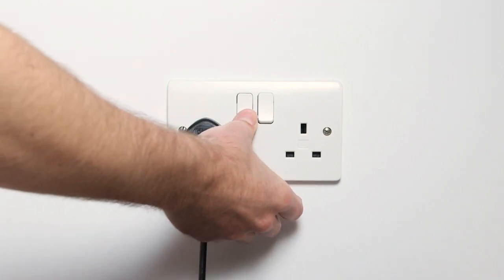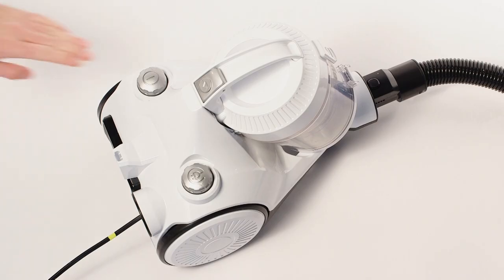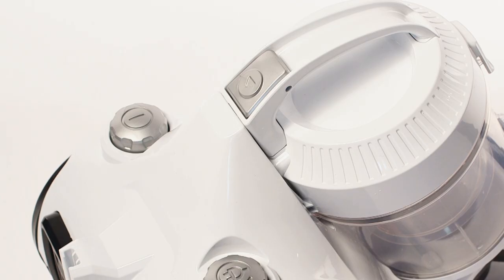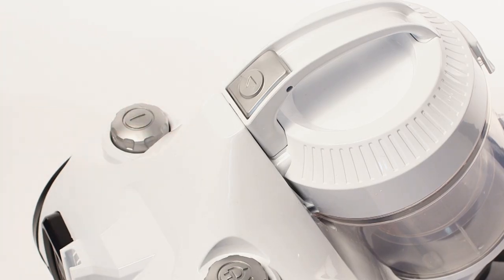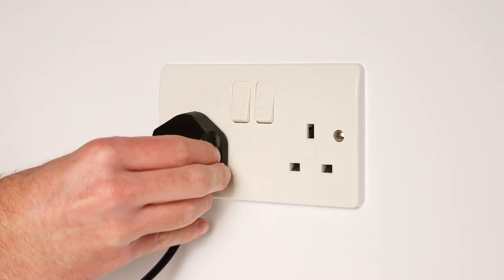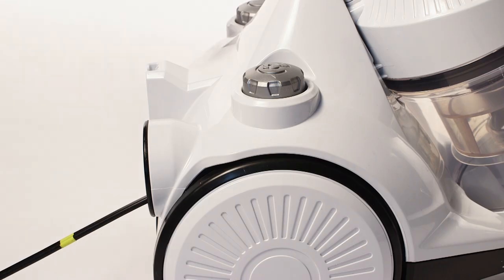Plug the vacuum into the main supply and press the ON-OFF button to start the vacuum. Press the ON-OFF button again to switch the vacuum off. Once the plug has been removed from the mains, press the Cable Rewind button.